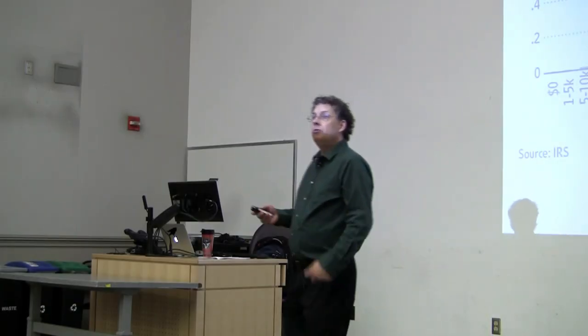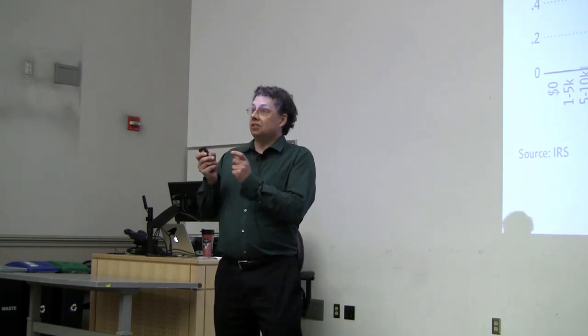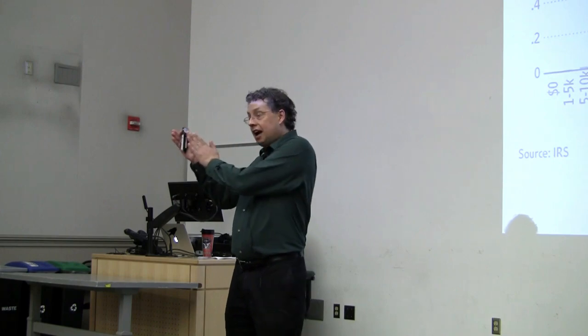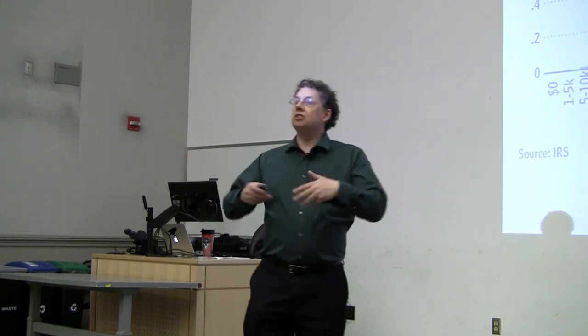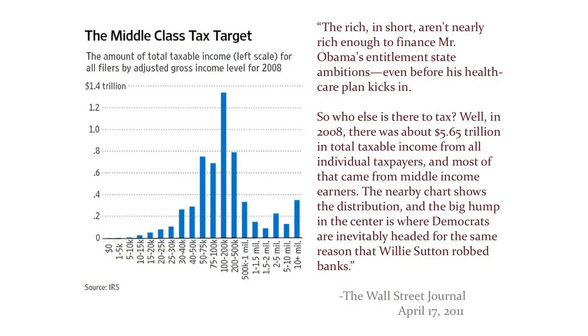Another bad thing that people can do with graphs is they can play around with the sizes of the bins. So if you have a bar graph and you've got different bins for different categories, you can play around with those sizes to make the bar graph say more or less whatever you would like it to. Here's another example that's fairly notorious, this one from the Wall Street Journal.